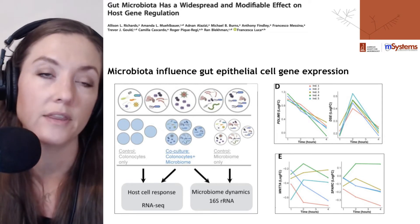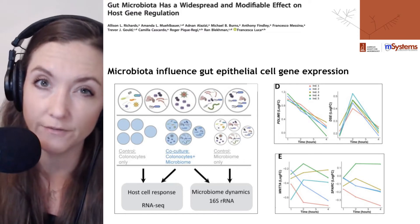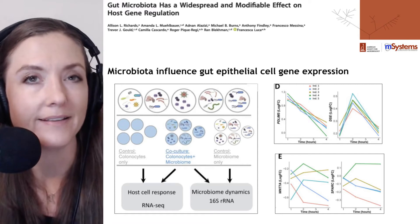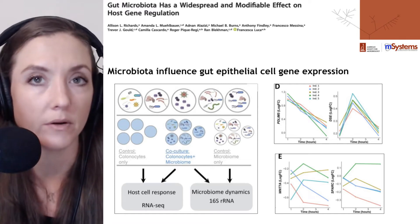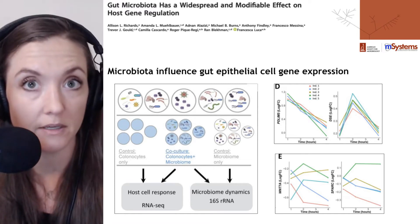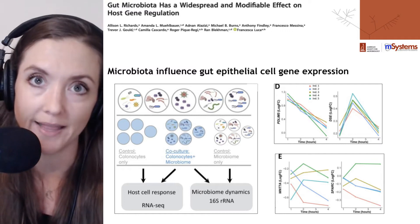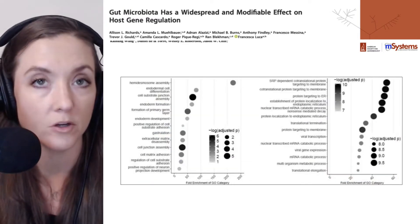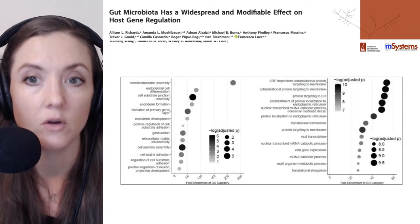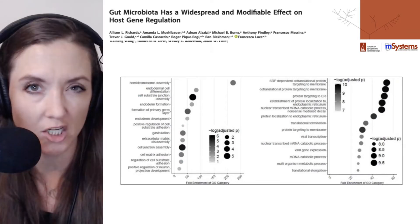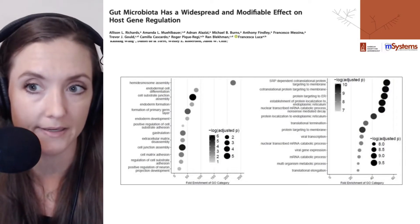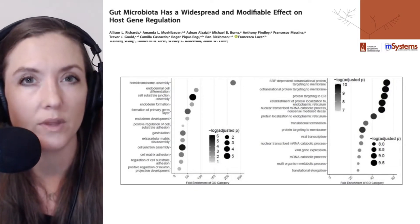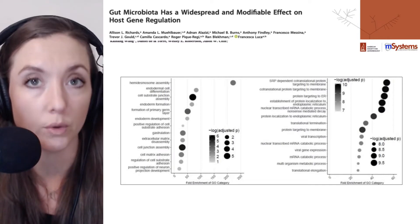Having shown that the different microbiota induced different gene expression changes in an otherwise identical system, they then hypothesized that the differences could be due to specific microbiota features, such as the abundance of certain taxa. Using statistical software, they determined that 121 host genes correlated with changes in microbial taxa, and that 35 taxa within this group were associated with the gene expression changes of two or more host genes.